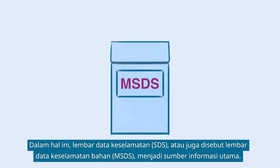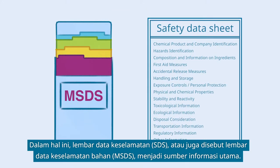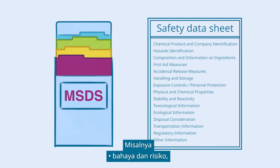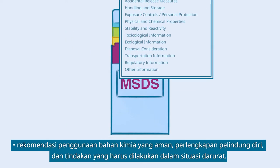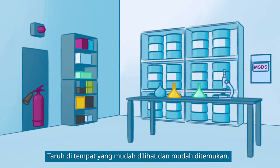In this regard, safety data sheets, also known as materials safety data sheets, are the key source of information. Compiled in a standardized format, these safety data sheets contain all kinds of helpful information about the chemical substance or formulation — for example, the hazards and risk, recommendations on the safe use of chemicals, personal protective equipment, and what to do in an emergency. Keep them visible and readily accessible.